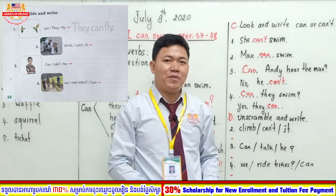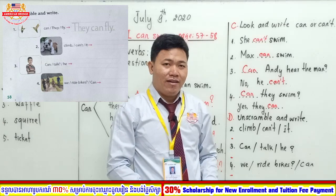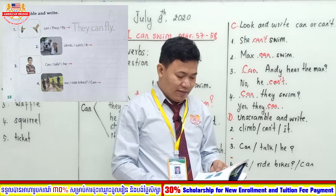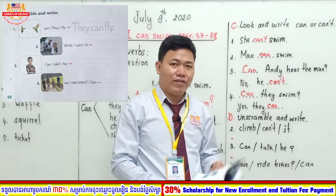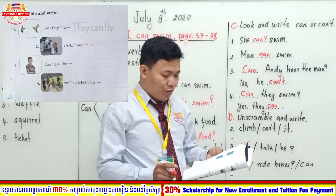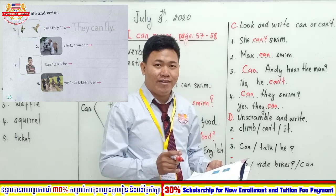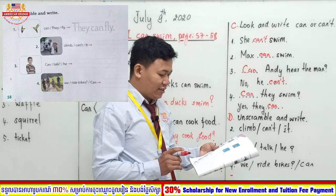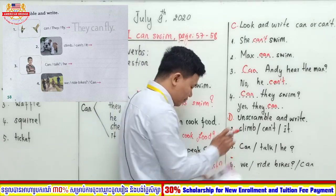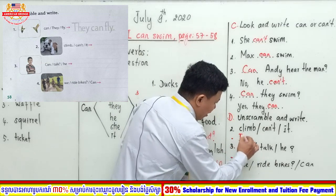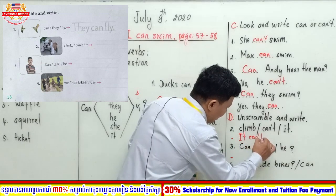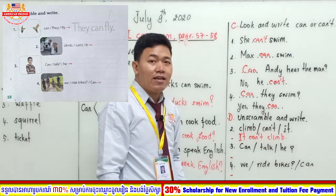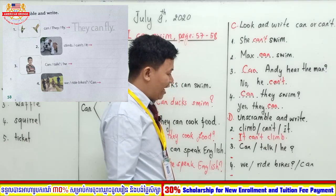After you spent five minutes I believe you have done it already. Please check the answers with me. For the first one it is done for you — the words are 'can / they / fly' — the correct sentence is 'They can fly.' How about the second one? The words are 'clam / can't / it.' Look at the picture — 'It can't climb.' It means that it cannot climb.